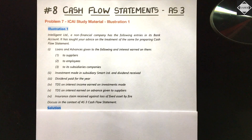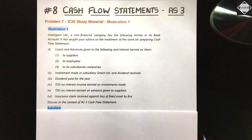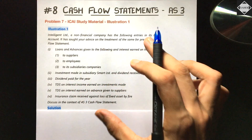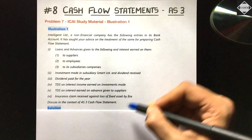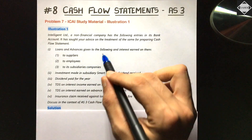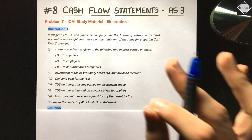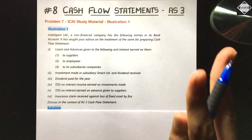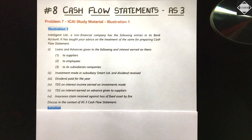Hi everyone, welcome back to Sahab Academy. Today in this eighth video of the Cash Flow Statement chapter, we are going to solve four different questions regarding classification of cash flows — which means a list of items will be given and you have to identify which item will go in which activity. We'll solve four questions: two from the study material, one from RTP, and one from previous question papers.